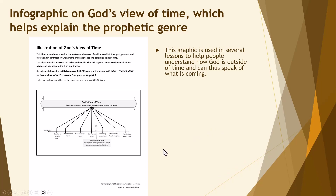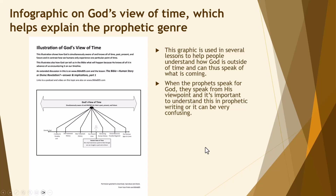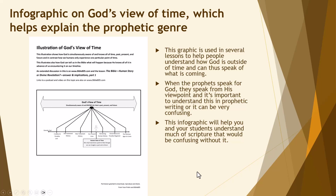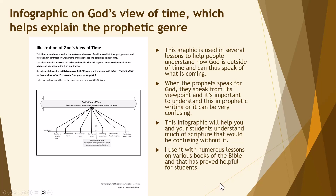Also really important for understanding the prophetic genre is God's view of time. I use this in quite a number of lessons, and I think you'll find it very helpful for people to realize that God exists outside of time. As the author of the Bible, he knows everything that happened in eternity past and all that will happen in eternity future. We just live in this little point of time, but God sees and knows all of it and can speak to it. When the prophets speak for God, they speak from his viewpoint — and that's why it's important to understand this isn't something they dreamed up or wrote after the fact, which many modern critics accuse them of, but that they're speaking from God's view outside of time. This will help you and your students understand so much of scripture that would be confusing without it.